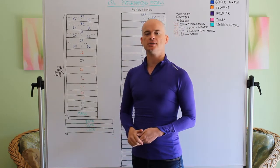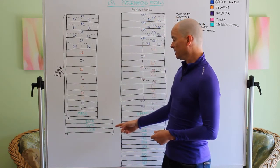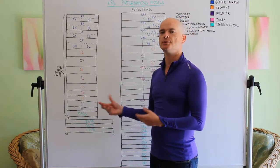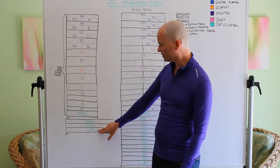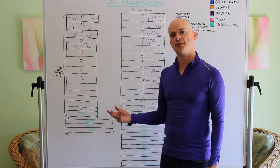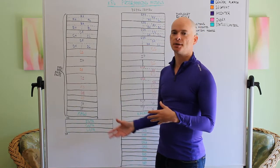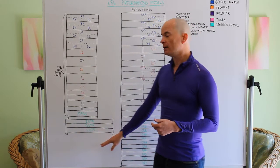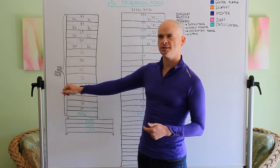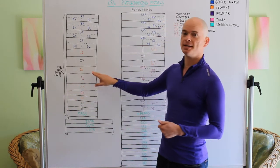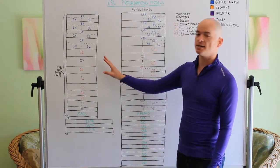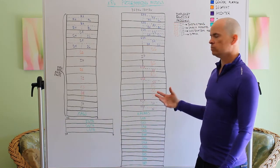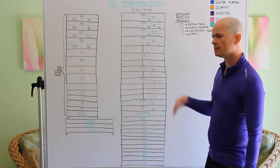The same thing with the GDTR, global descriptor table register, it points, like the IDTR, to a place in memory where the global descriptor table is stored. And the same thing with the LDTR, local descriptor table register, it points to a place in memory where the local descriptor table is stored. Each of these three registers is 40 bits wide. You can only see, as the programmer, I think 16 of them through the segment registers. Just know that they exist for now and that they're pointers, they point to places in memory.